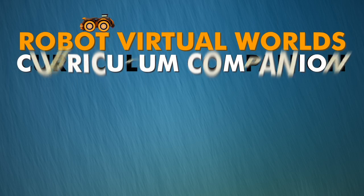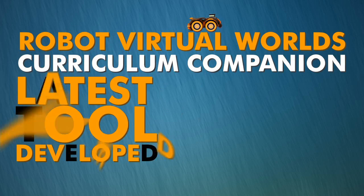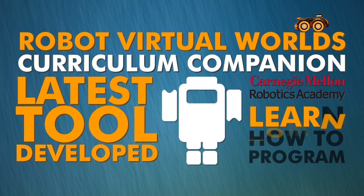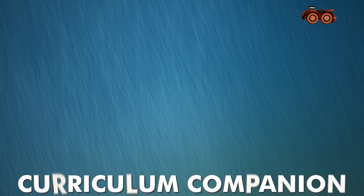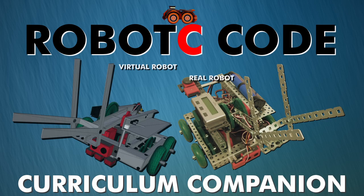The Robot Virtual Worlds Curriculum Companion is the latest tool developed by Carnegie Mellon's Robotics Academy to teach students how to program. The Curriculum Companion allows students to use the same Robot C code to control their real and virtual robots.